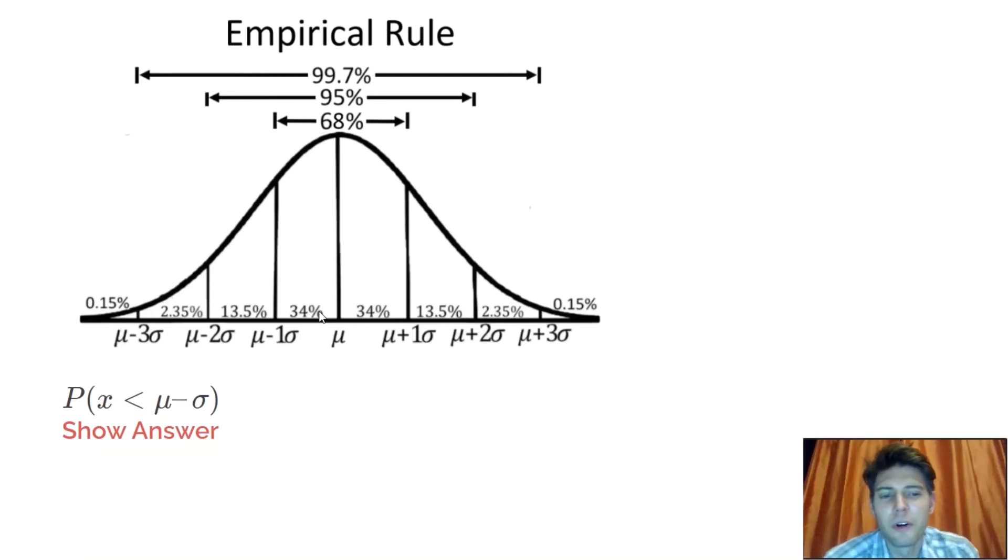This is one of the normal distribution questions. A lot of times you'll see this called the empirical rule or the 68, 95, 99.7 rule.